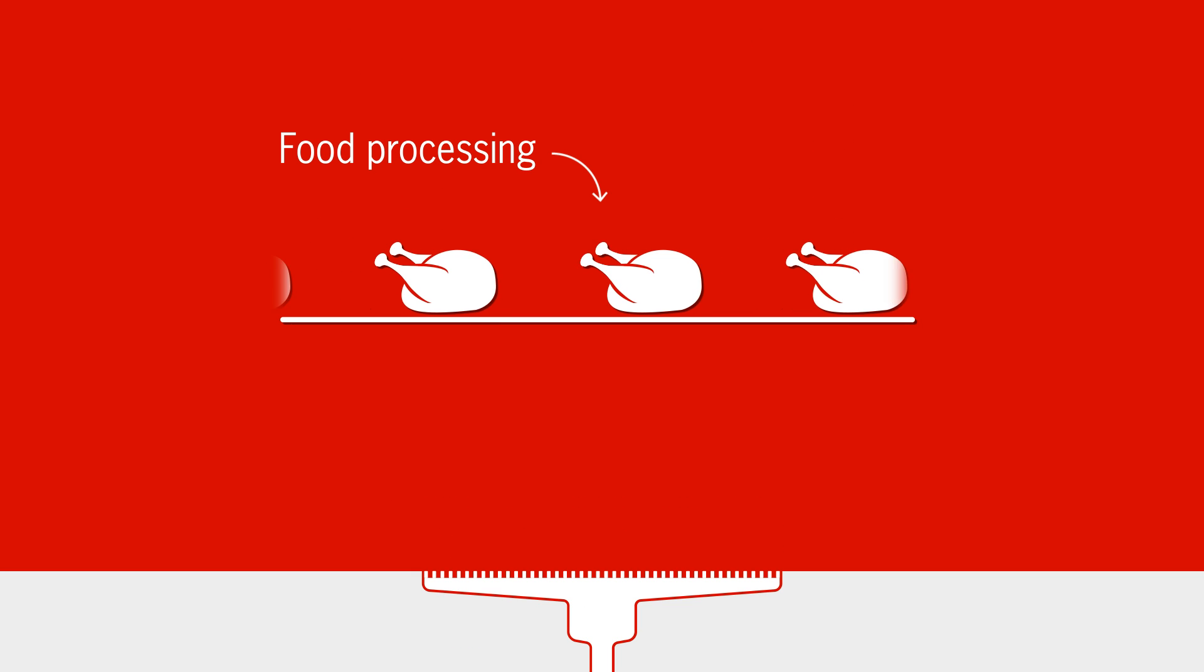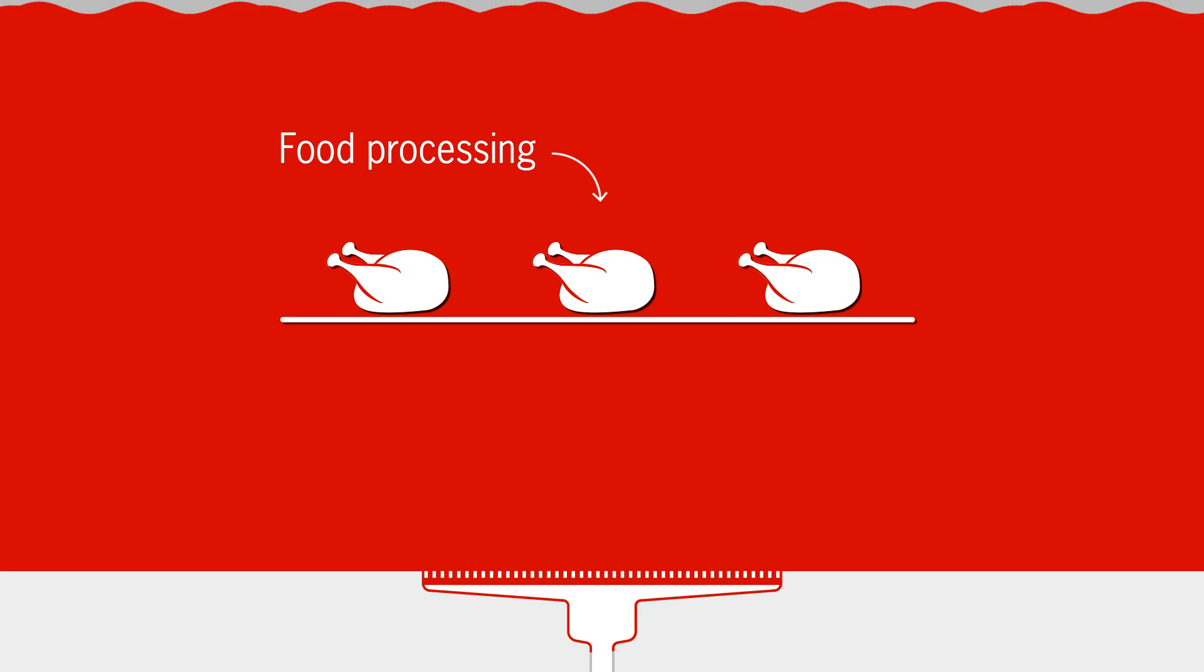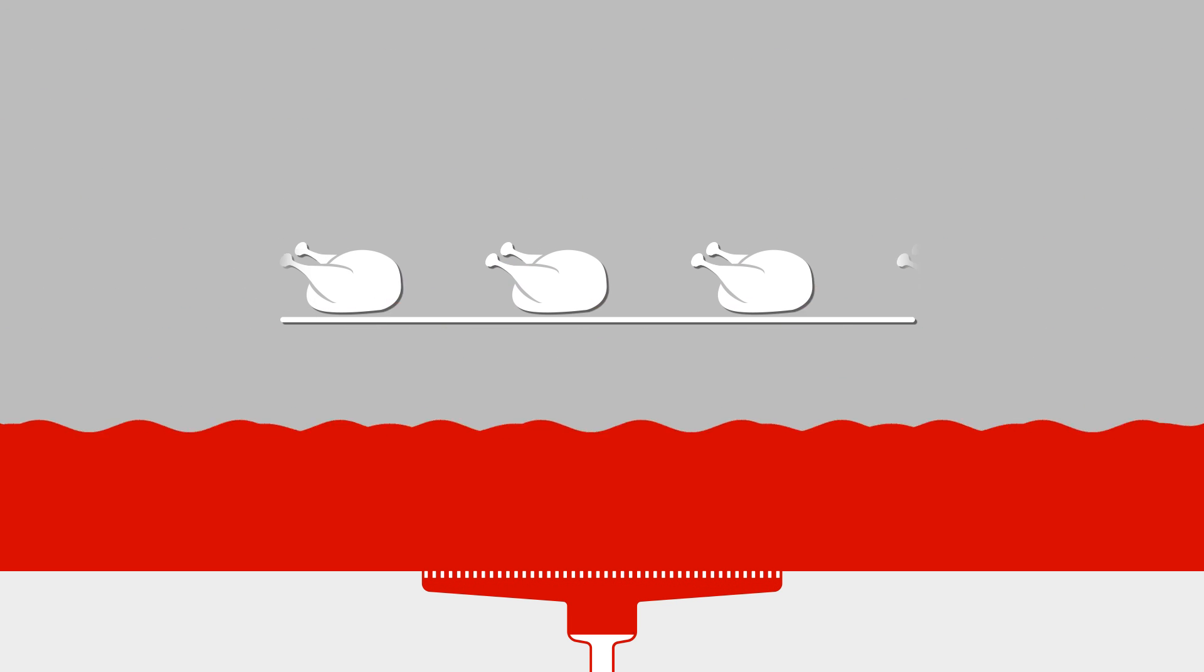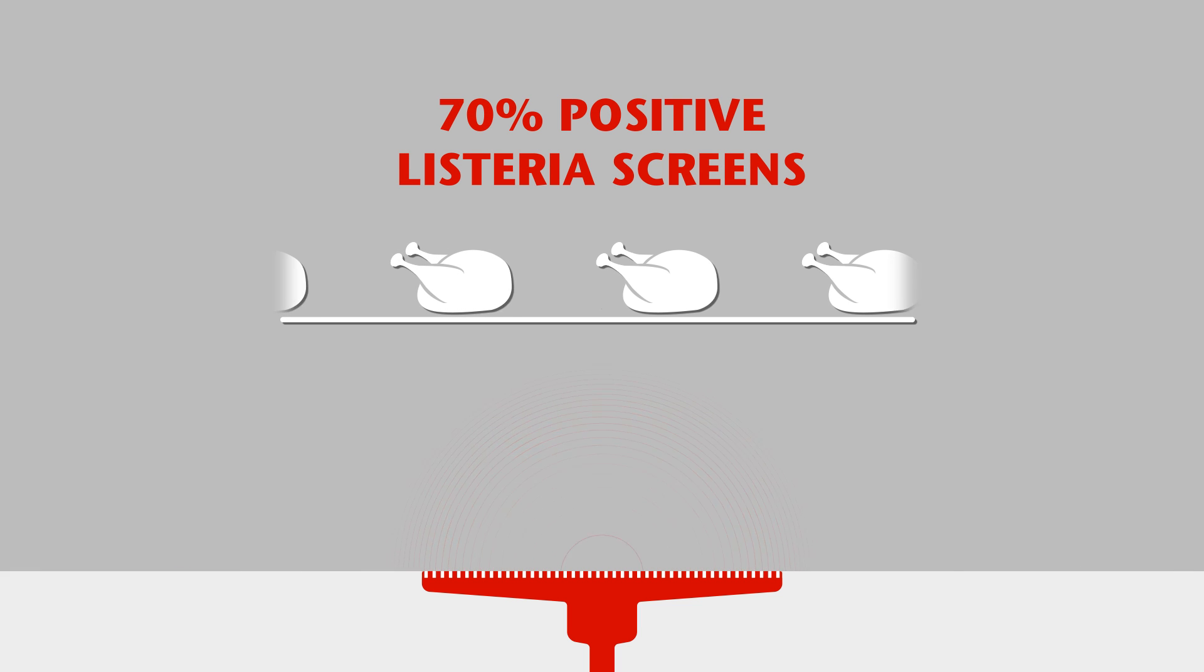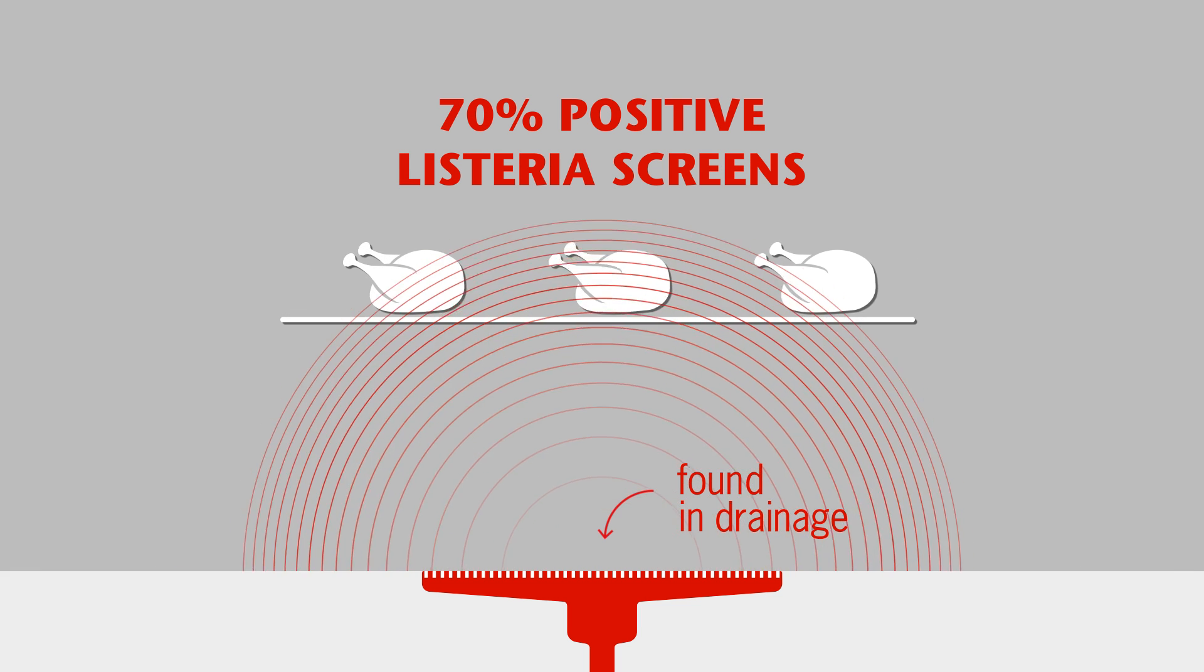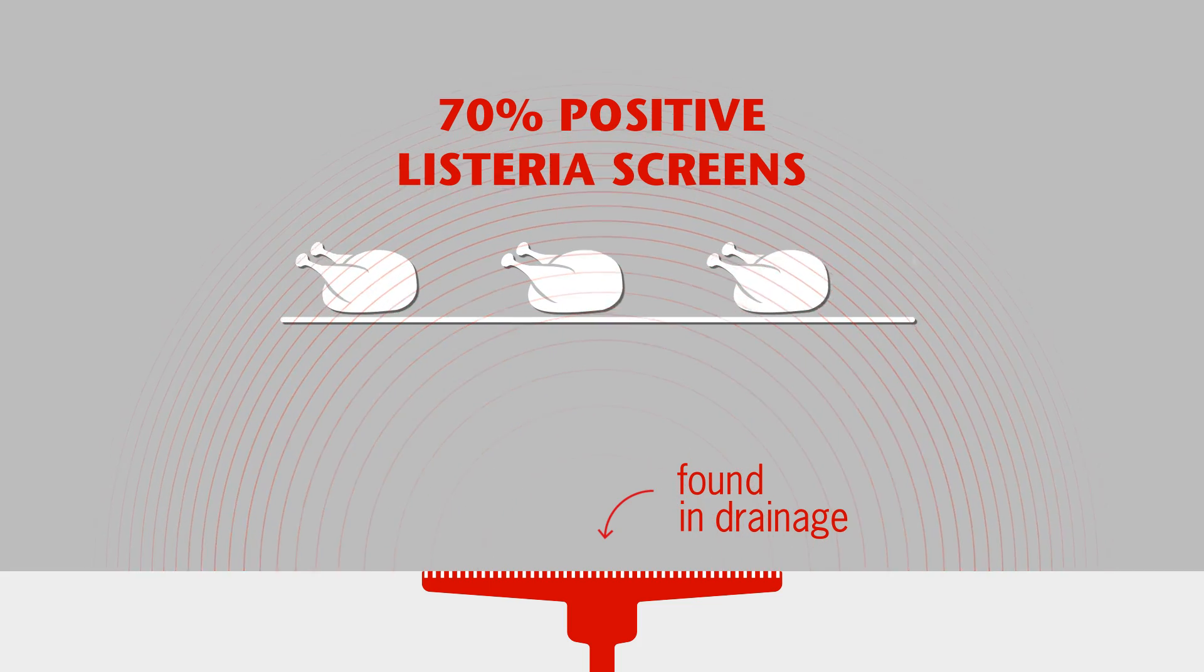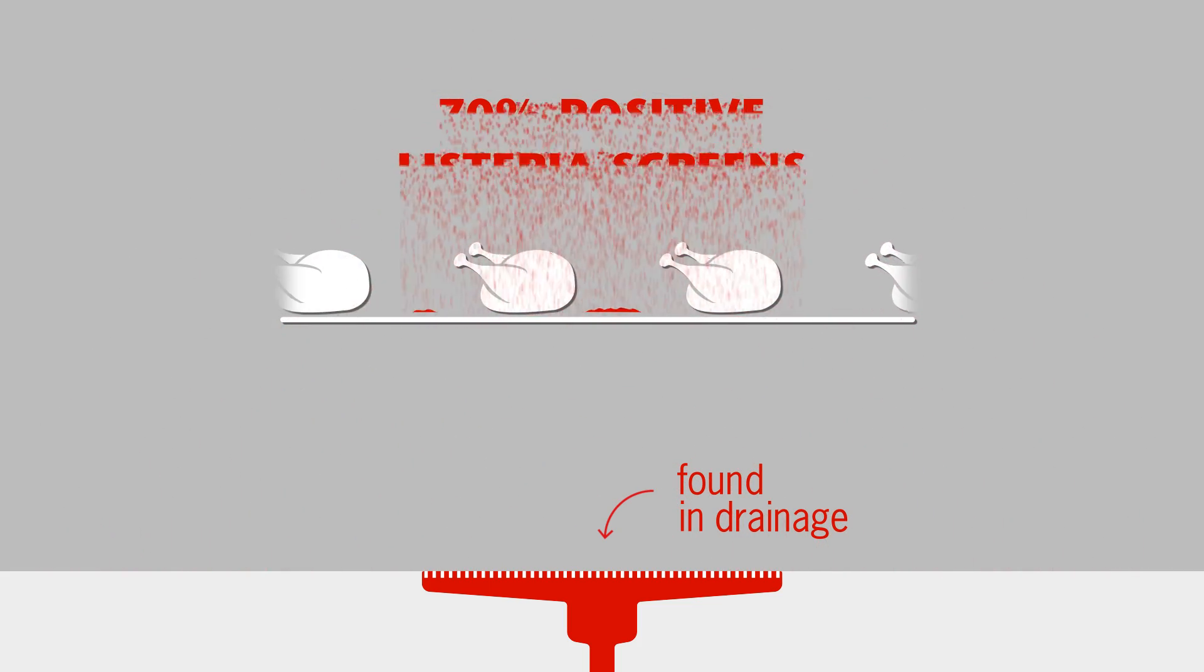We are in the food processing environment, which is literally washed down into the drainage every time it is cleaned. No wonder that 70% of positive Listeria screens are found in the drainage. It means the drainage may be the point of food contamination.